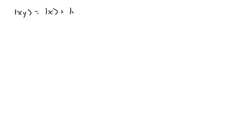So far, to discuss a specific vector, we've been giving that vector as a linear combination of some basis vectors. To talk about the vector x, y, we say it's the basis vector x plus the basis vector y. A shorthand for expressing that linear combination is to put the coefficients of the basis vectors in a column. The column vector that corresponds to the vector x, y would be 1, 1. The first entry means the coefficient in front of the basis vector x is 1, and the second entry means the coefficient in front of the basis vector y is also 1.